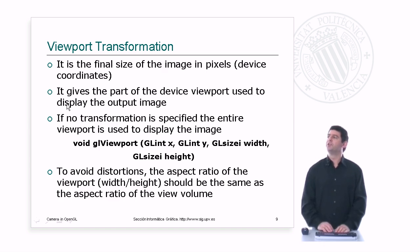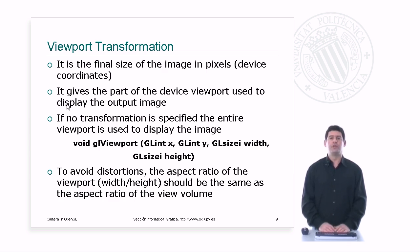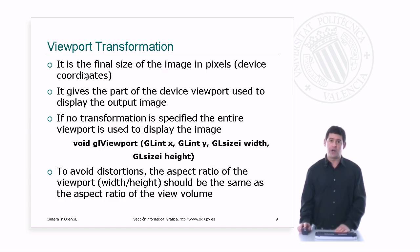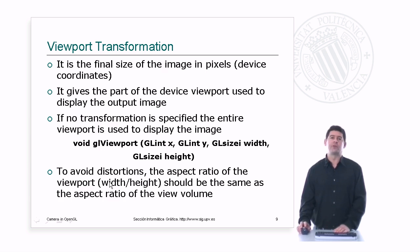Once the camera position, orientation, and view volume are set up, we configure the viewport transformation. It gives the final size of the image in pixels — in device coordinates — and configures what the output image looks like inside the output window. If no transformation is specified, the entire viewport is used. The glViewport function has four parameters: X and Y give the lower left corner of the output viewport, and width and height configure the viewport dimensions. To avoid distortions, the aspect ratio of the viewport should match the aspect ratio of the view volume.